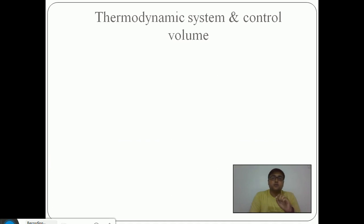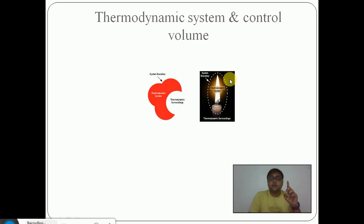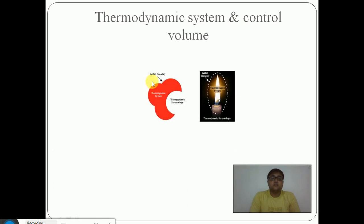Thermodynamic system and control volume. Any region or place in which thermodynamic analysis is carried out is called a thermodynamic system. For example, if we are analyzing the heat of a flame, that flame region is our system. The dotted line is the boundary of the system. There are two types of boundary: diathermic boundary, which allows heat transfer, and adiabatic boundary, which does not. Everything outside the boundary is called the surrounding, and the boundary separates the system from the surrounding.